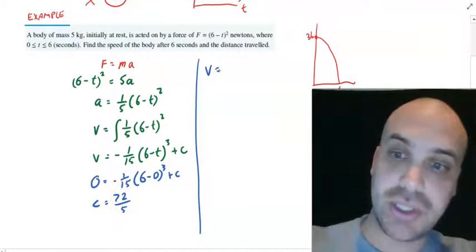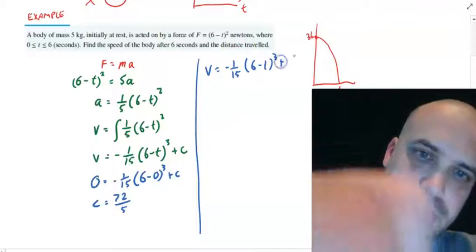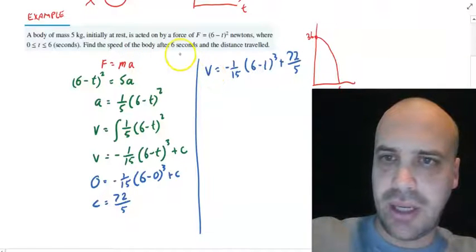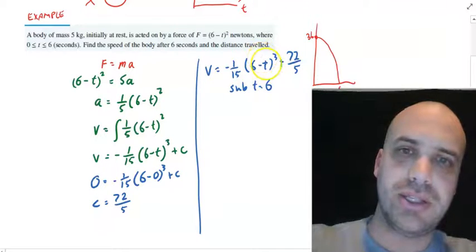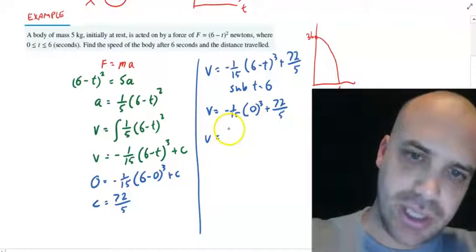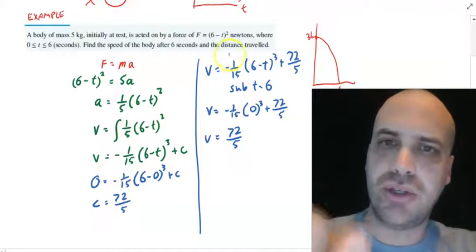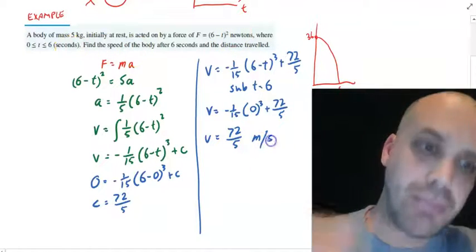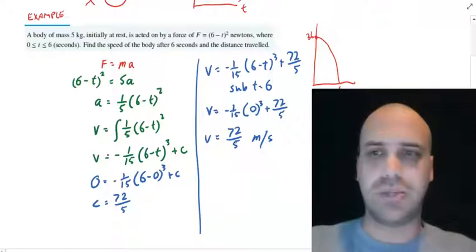Which means that our velocity function, we know all of it now, negative 1/15, 6 minus t cubed plus 72 over 5. And we want to know the velocity or the speed at time 6 seconds. So, sub t equals 6 into that equation. And when we do that, we get a 0 here. That's just going to leave us with velocity equals 72 over 5. Checking for units here, we had newtons, we had seconds. So, we're going to end up with meters per second. So, the velocity after 6 seconds is 72 over 5 meters per second. Done.